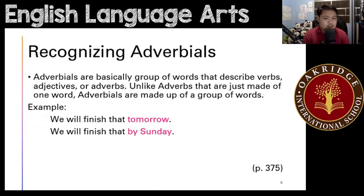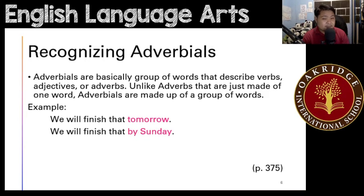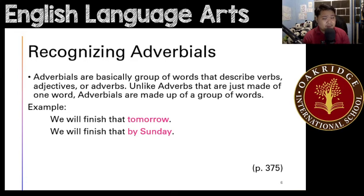For example, you have two examples there. We will finish that tomorrow, and we will finish that by Sunday. On the first one, it's just one word — that is an adverb. But on the second sentence, it's made up of two words: by Sunday. Then that is an adverbial. So basically, it's just the same thing, except that adverbs are just one word, and adverbials are a group of words.